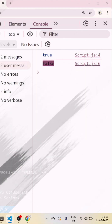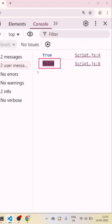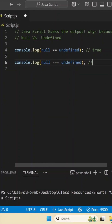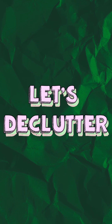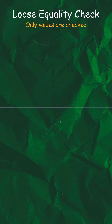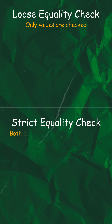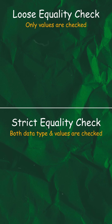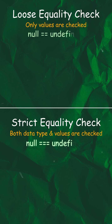But if we compare null with undefined with strict equality, we get false. Why is that? In loose equality, only values are checked. On the other hand, in strict equality, both the data type and the values are checked.